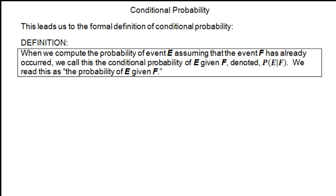Here's the formal definition: when we compute the probability of event E assuming that event F has already occurred, we call this the conditional probability of E given F. We denote it P(E|F), and it's read 'the probability of E given F.'